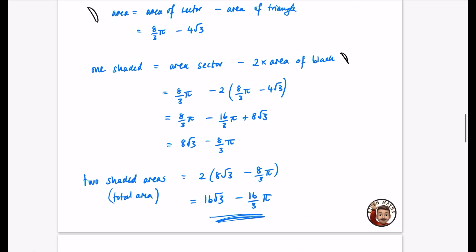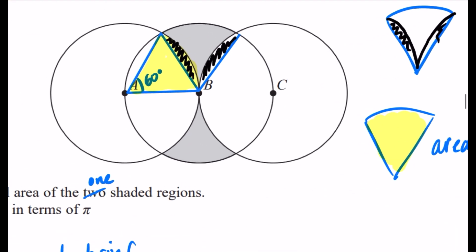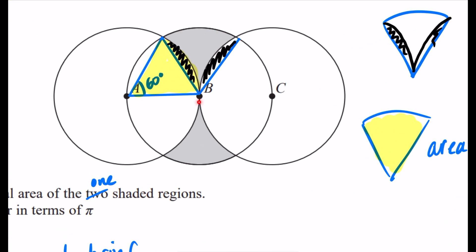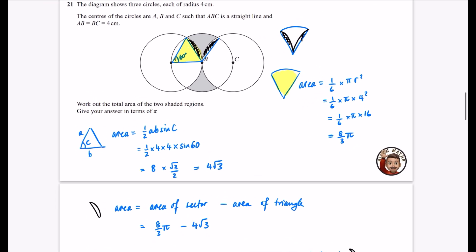Now, there probably are other ways of breaking this shape down. My technique was to see it as a sector and to remove this little black section. And I knew the area of this sector. I found the black section by removing the triangle. I then removed both of those black sections from one of them. And because it wanted it for two shaded regions, at the end, I doubled my answer.